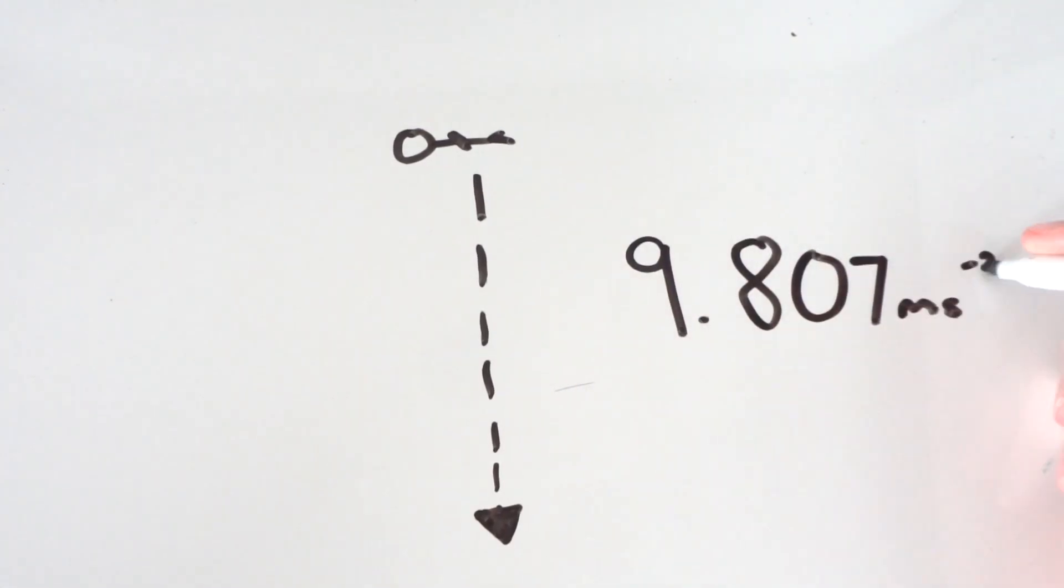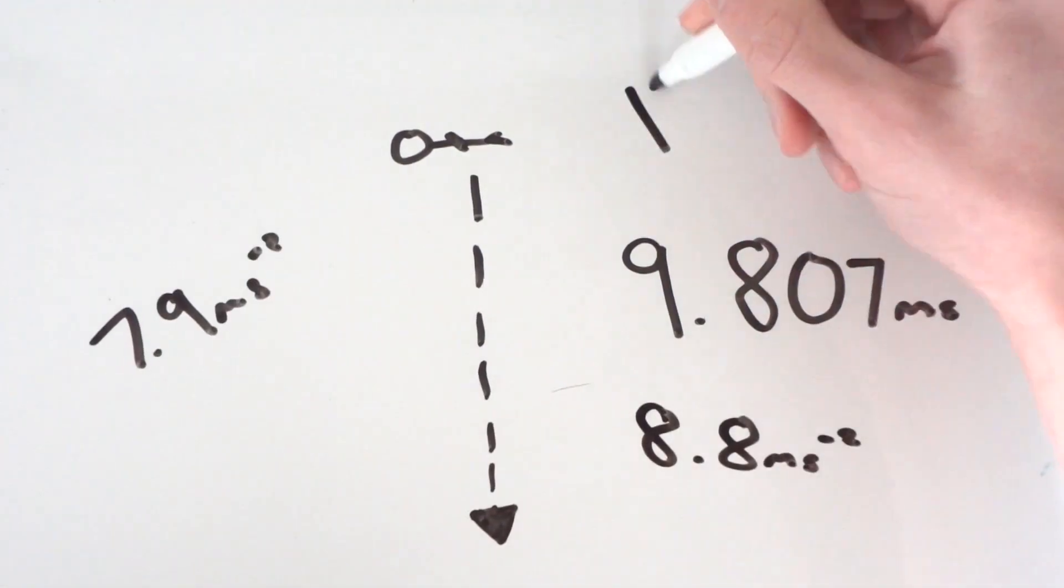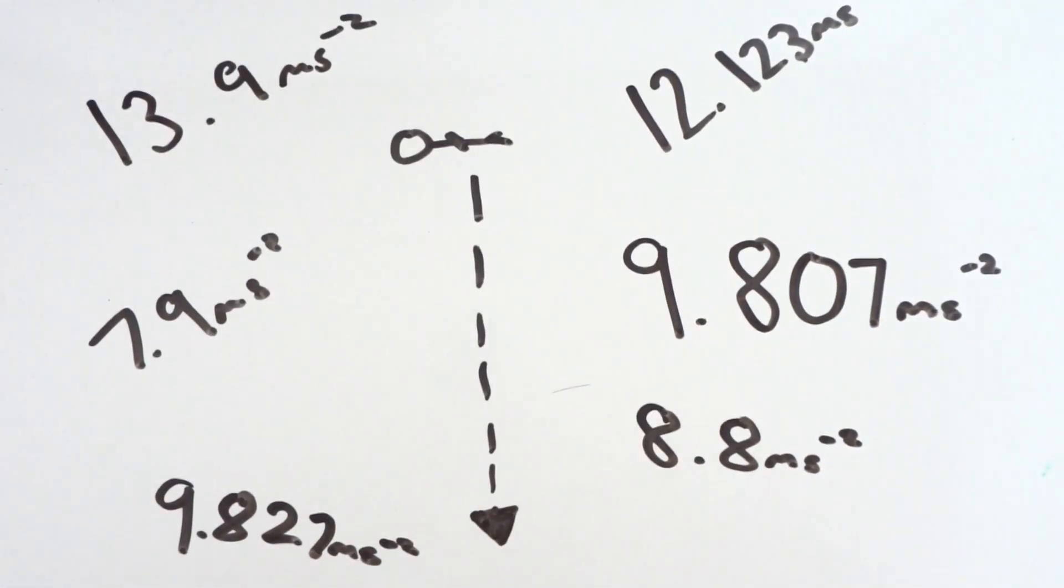You've probably heard that gravity is around 9.807 meters per second squared at sea level, but is this number the same everywhere around Earth?